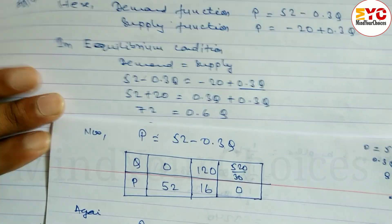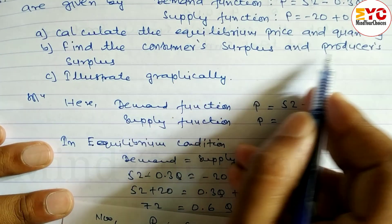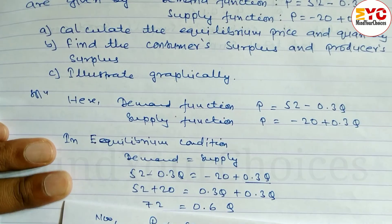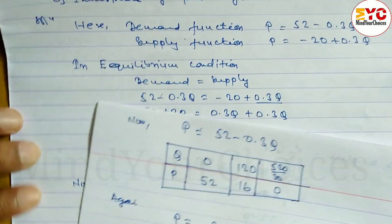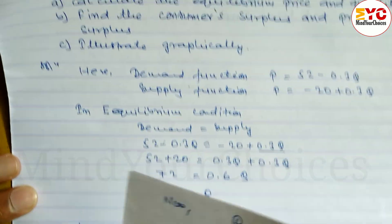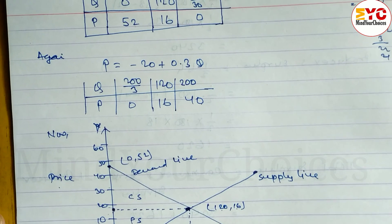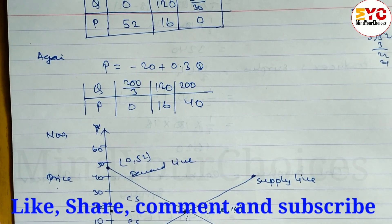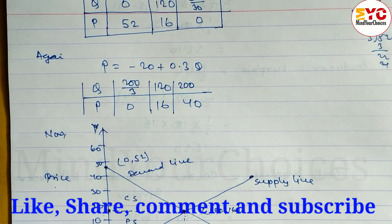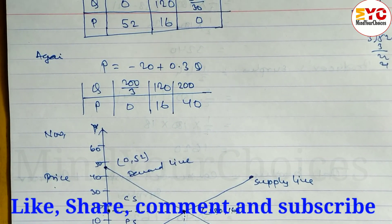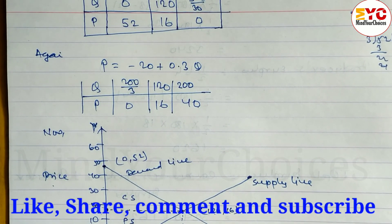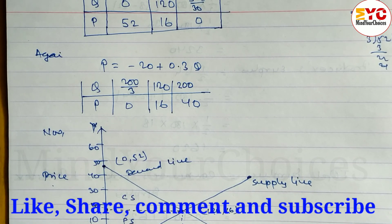So we have found consumer surplus = 2160 and producer surplus = 1493.33. No need to find the total surplus. Hope you understand this question, taken from system of linear equations and its application, Class 11 Business Mathematics. If you understand, please hit the like button, please subscribe, and do not forget to share with your friends. Thank you.